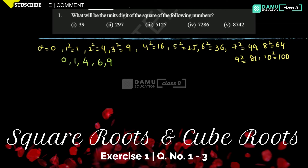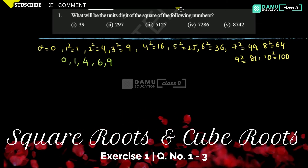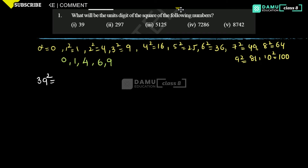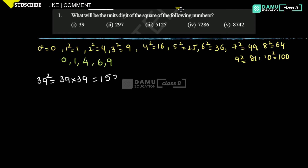These numbers only repeat as unit digits in squares. Let's start: first one is 39 squared. So 39 into 39 will be 1521. We are getting unit digit is 1 for this. Or you can use another method: take the unit digit 9, 9 into 9 = 81. Take the unit digit of that multiplication, so unit digit = 1.